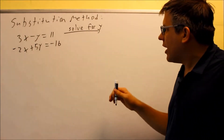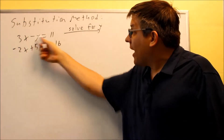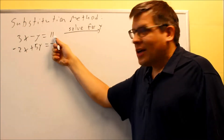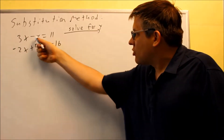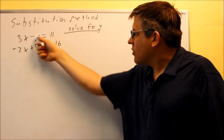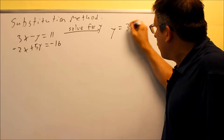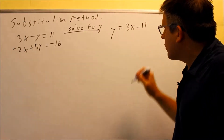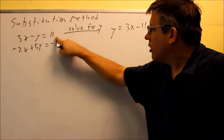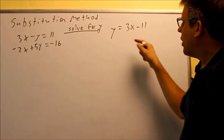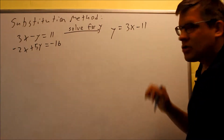If I solve for y, what I would do is add y to both sides and subtract 11 from both sides — basically switching the places of those two things. I would get y equals 3x minus 11. So I add the y over here, subtract the 11, and there's my equation solved for y.